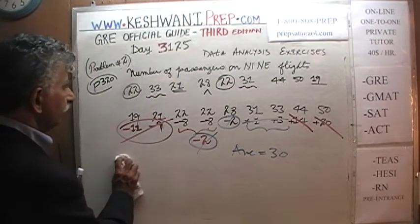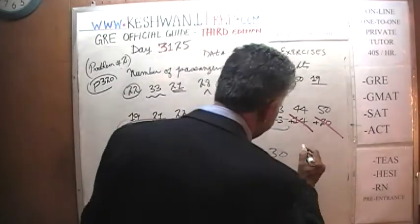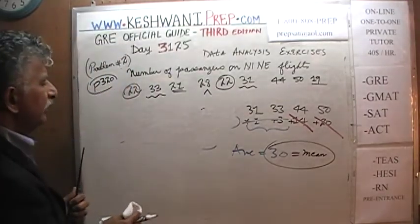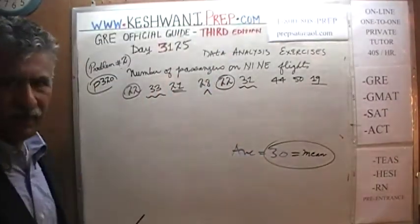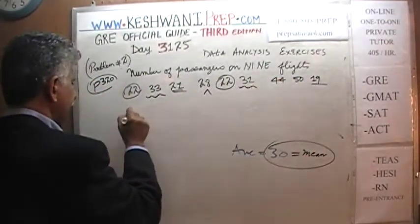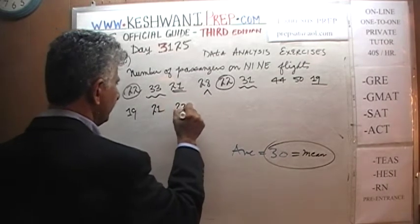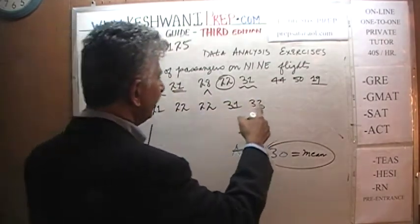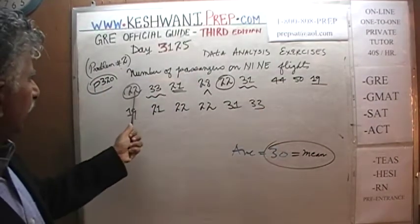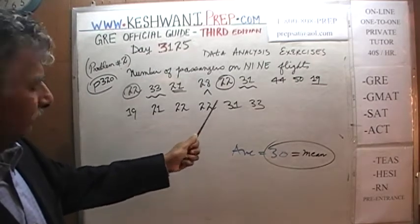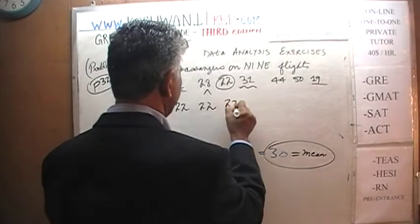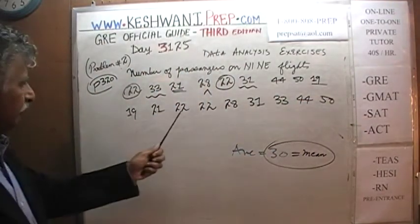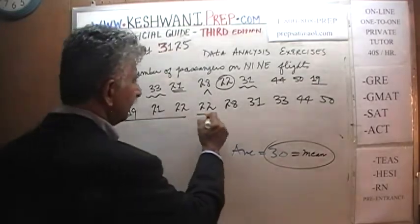Let's figure out the median first. The mean is 30. We need to rewrite the observations in order: 19, 21, 22, 22, 28, 31, 33, 44, and 50. Let's make sure — 3 here, 3 here, 3 here — we have 9 observations. Since there are 9 of them, with 4 on this side and 4 on that side, the middle value is right there — the median is 28.